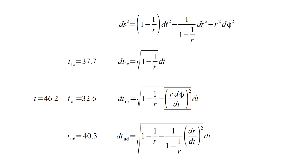The orbiting triplet has the same 1 minus 1 over 3 terms and an additional negative velocity squared term, so he should measure even less time than the stationary triplet. R is 3 and d phi over dt is 2 pi radians in 46.2 seconds.